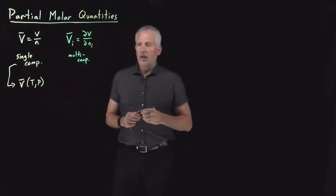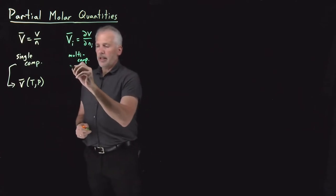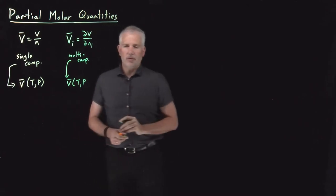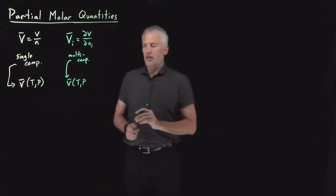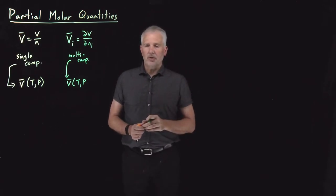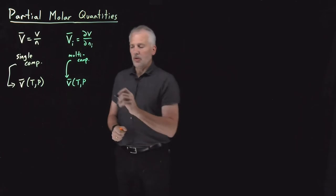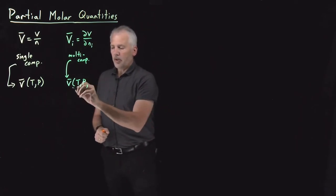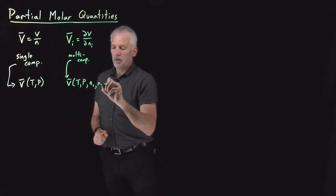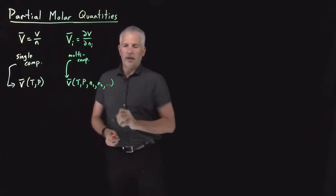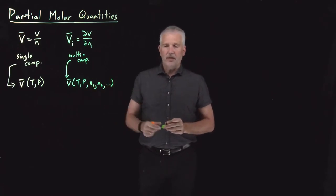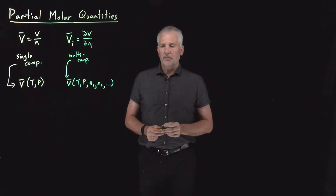For a multi-component system, it's a little more complicated. Certainly if I change the temperature or the pressure, that will change the partial molar volume. But just like adding the second mole of sodium chloride to a solution changes the volume by a different amount than the first mole, that partial molar volume is going to depend on how many moles of substance one, how many moles of substance two, and so on — on the composition and concentration of the different components.